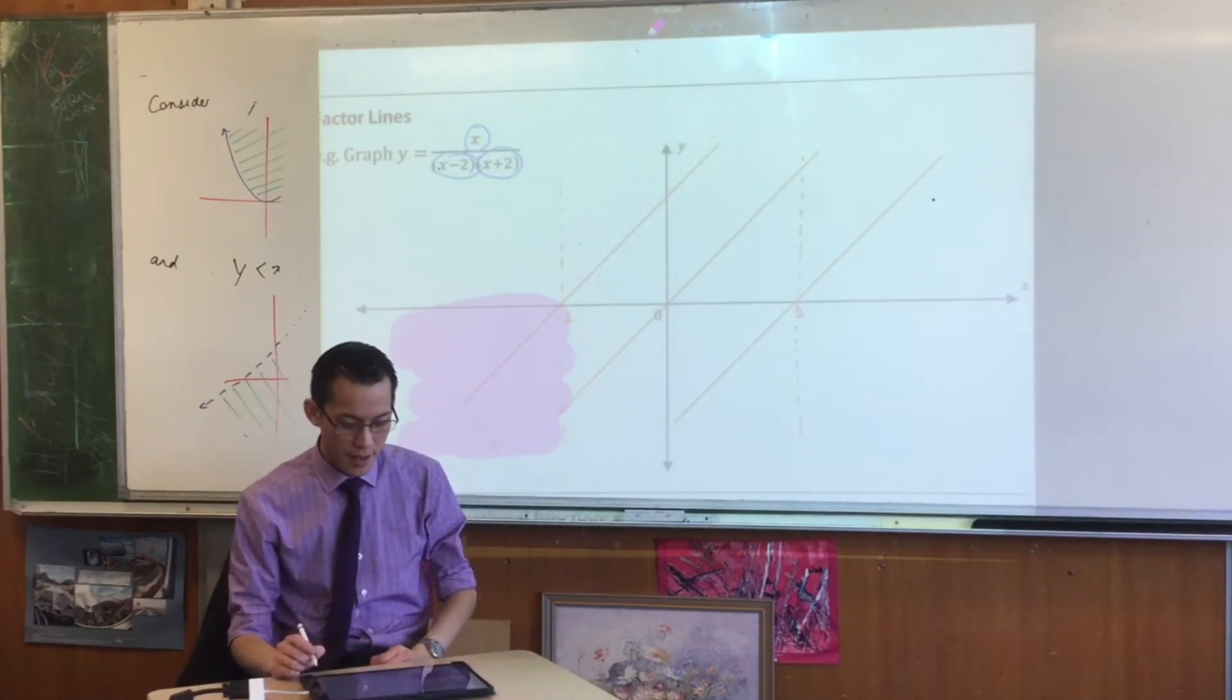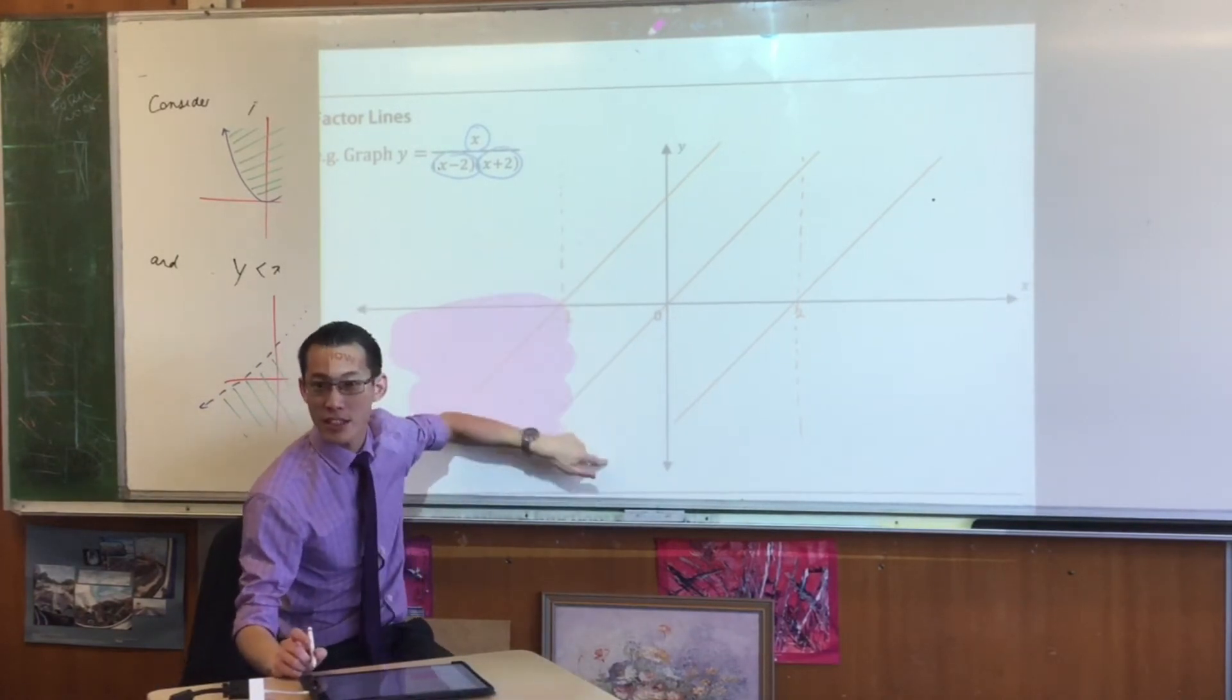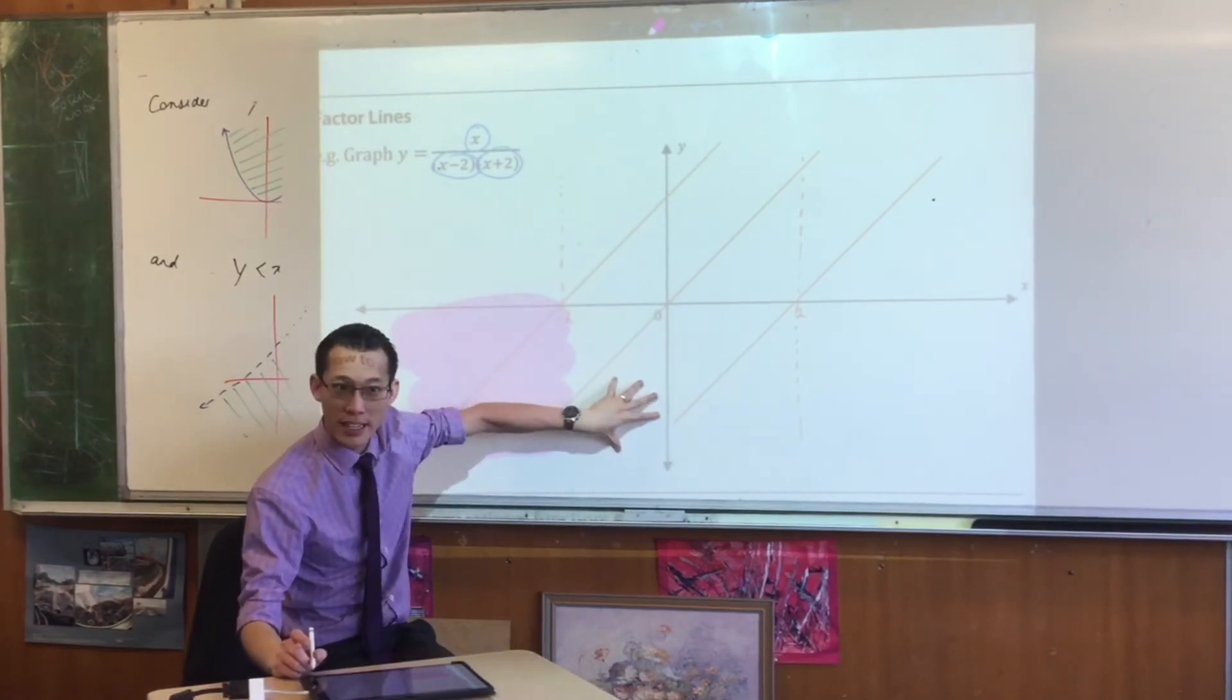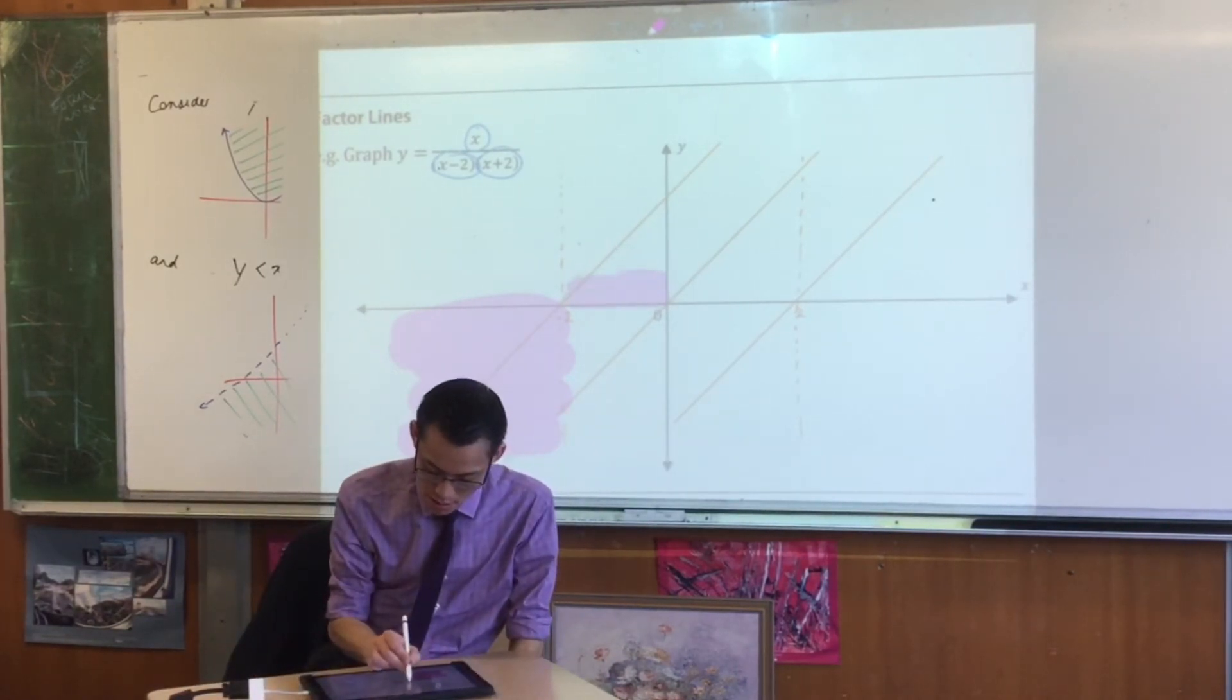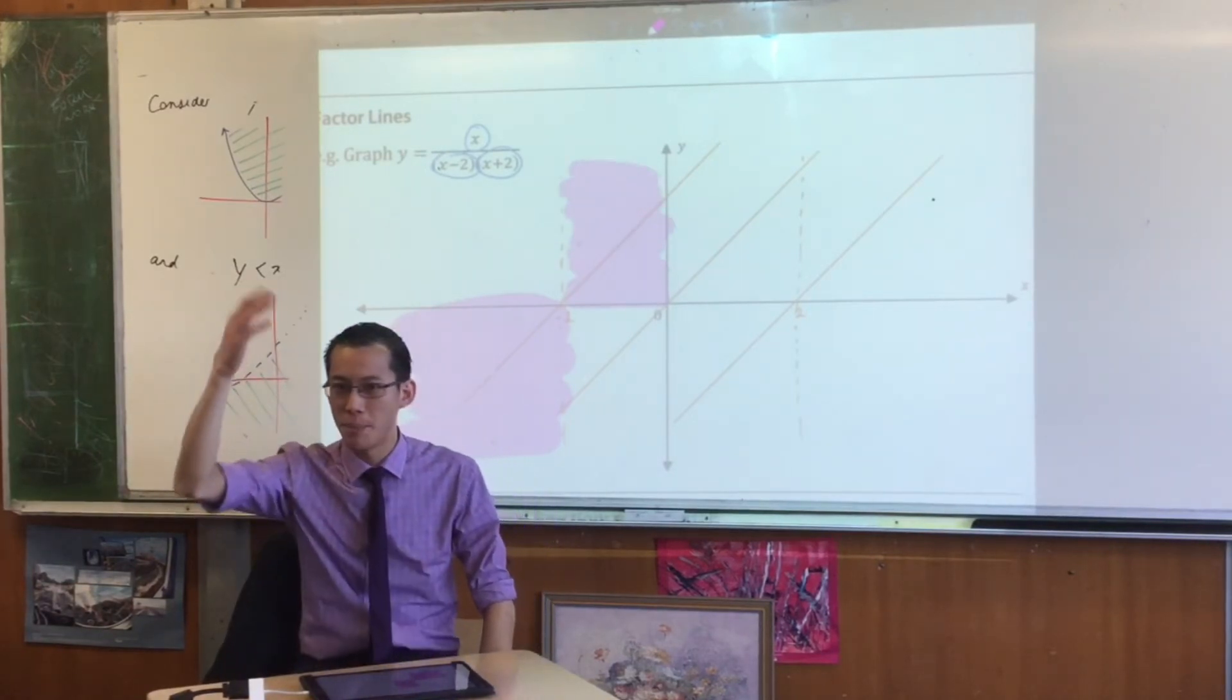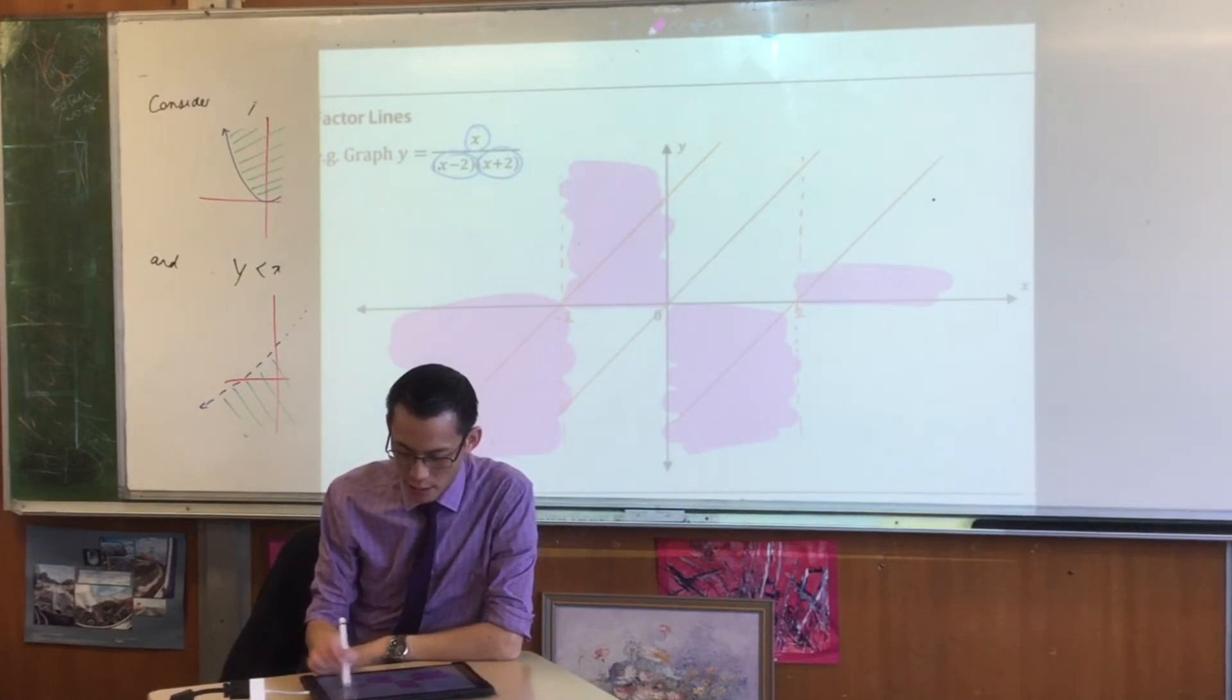When you transition from the left of negative 2 to the right, you no longer have three negative factors. You've got a positive and two negatives, so the result is positive. In fact, it just switches up and down each time it crosses, each time it changes sign.